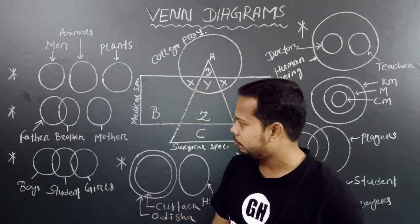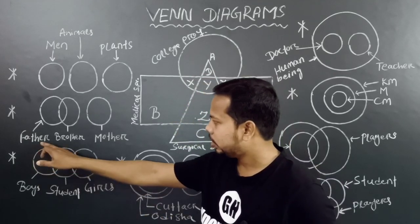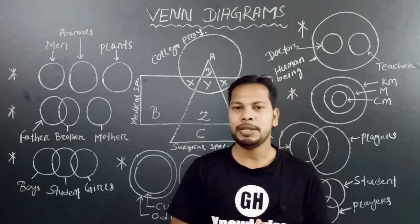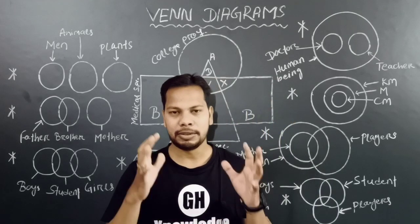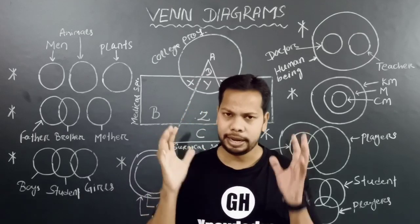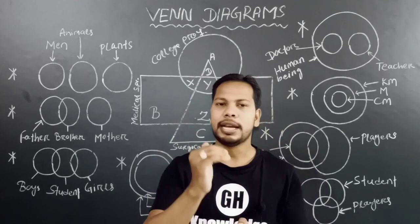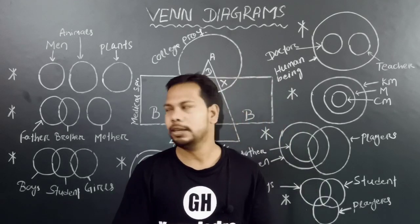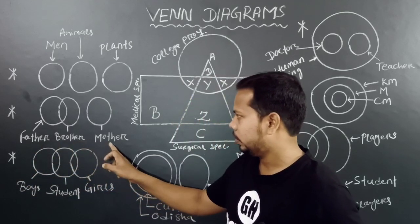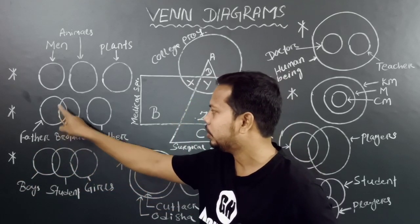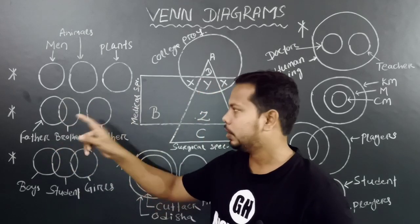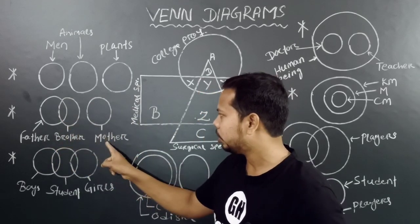You will practice the last question. If you look at the question, you will be able to answer it. Father, brother, mother — this is what we call father, brother, male. So this is the mother of mother.